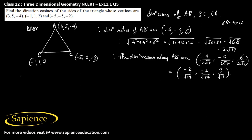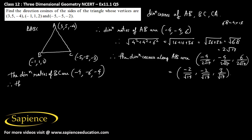Now we need to find the direction ratios of side BC. Those are: minus 5 minus 1, that is minus 4; then minus 5 minus 1, that is minus 6; and minus 2 minus 2, that is minus 4. Therefore, the value of square root of 4 squared plus 6 squared plus 4 squared will again be square root of 68, that is equal to 2 root 17.